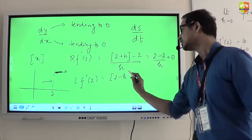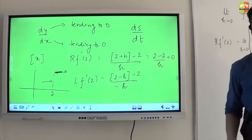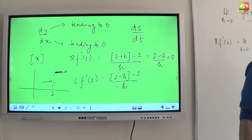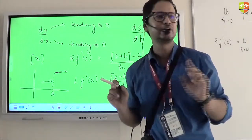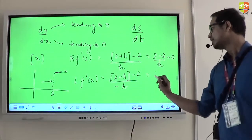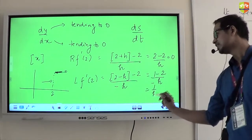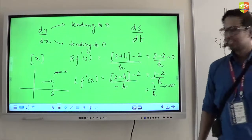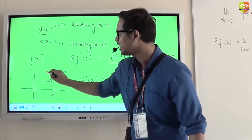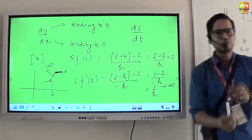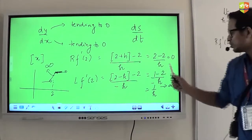GIF of (2 minus h) minus 2, divided by negative h. Now what is GIF of (2 minus h)? It's 1 — slightly less than 2, like 1.99999; take GIF of that and you get 1. So you get (1 minus 2) divided by minus h, which is actually 1 by h. So can I say this is tending to infinity? That is happening because if I connect point 2 with a point just left of 2, this line will have infinite slope — almost vertical to the x-axis. So are these two values, 0 and infinity, the same? No.